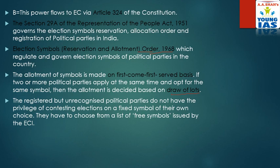For a national party: the party secures at least 6% of total valid votes in any 4 or more states in Lok Sabha or state legislative assembly elections, and in addition wins 4 seats in Lok Sabha. Or, wins at least 2% of seats in Lok Sabha — that means right now, with 543 members, that's 11 seats — and these members are elected from 3 different states. One more condition: if the party is recognized as a state party in at least 4 states, it will be considered a national party.